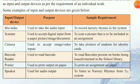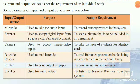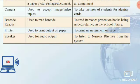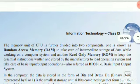Some examples of input and output devices: a microphone is used to take audio input — for example, to record nursery rhymes. A scanner is used to accept digital input from a paper or picture. A camera is used to accept image or video inputs. A barcode reader is used to read barcodes. A printer is used to print output on paper. A speaker is an output device used to listen to music, and a printer can print any document on paper.